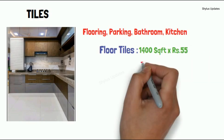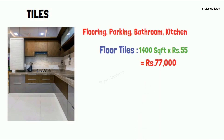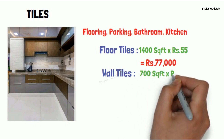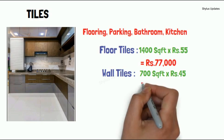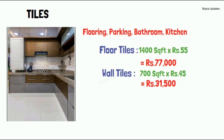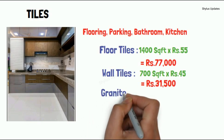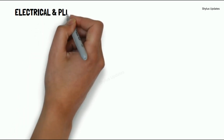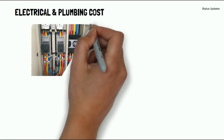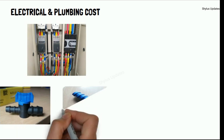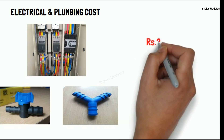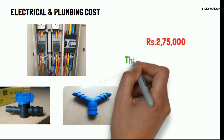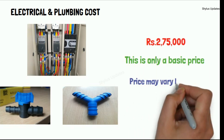Wall tiles are required for 700 square feet. The current market rate of a wall tile is Rs. 45. When you multiply 700 square feet by Rs. 45, you get Rs. 31,500. Granite costs approximately Rs. 10,000. For electrical and plumbing, the material cost is Rs. 2,75,000. This is only a basic price; price may vary based on design and brand.